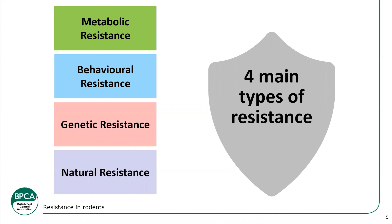Why do we have resistance? There are two main reasons. First, we've had very few active ingredients with many legal restrictions — for example, single-use single-feed baits were at one point banned from external use. Second, in the early days there was a lot of poor practice: not following product labels, not using products correctly, or not fully eliminating infestations. This left resistant rodents behind, which then bred and created populations with higher resistance levels in that area.